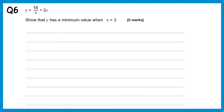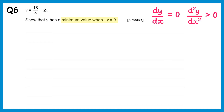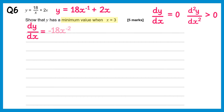For this question we need to show that y has a minimum when x equals 3. If y is a minimum it's a stationary point, so we need to show dy/dx equals 0, and that d²y/dx² is greater than 0. We rewrite 18/x as 18x⁻¹. Differentiating gives dy/dx = negative 18x⁻² plus 2, which we can write as −18/x² + 2.